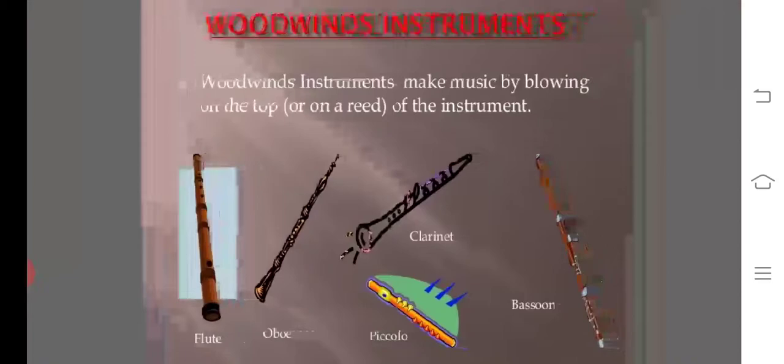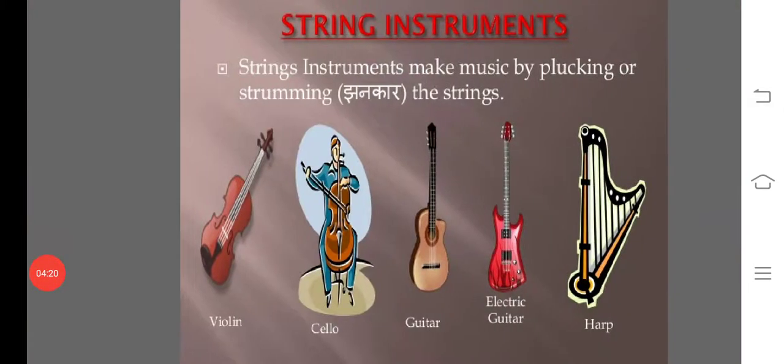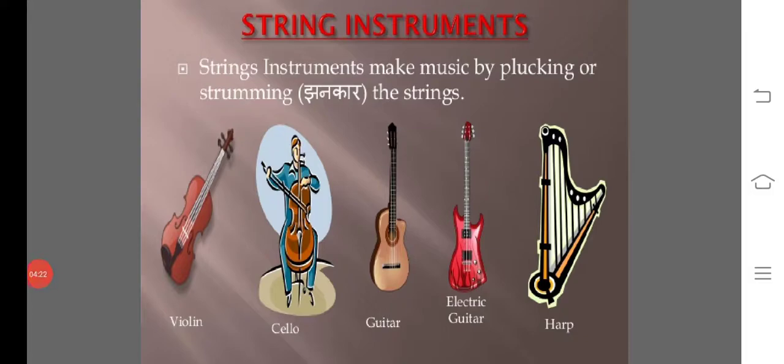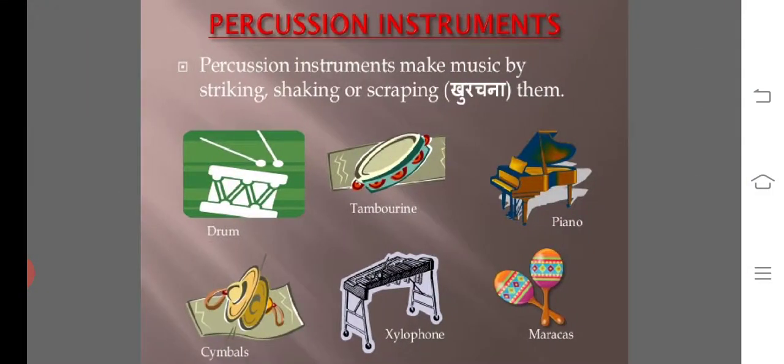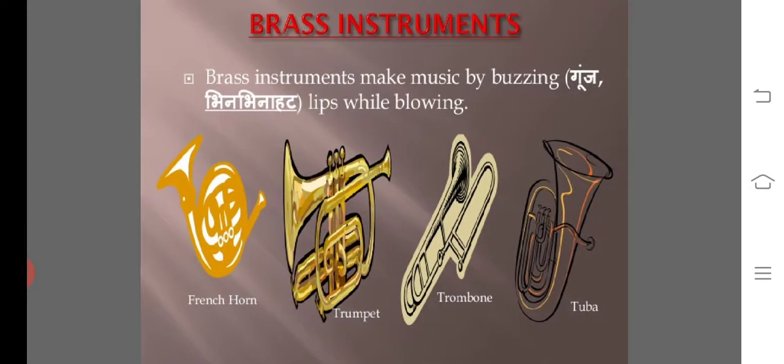Woodwind instruments make sound by blowing on the top of the instrument. String instruments make music by plucking or strumming the strings. Percussion instruments make music by striking, shaking or scraping them. Brass instruments make music by buzzing lips while blowing.